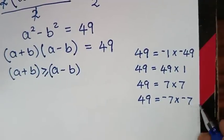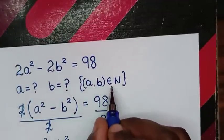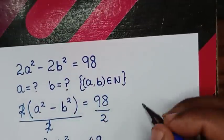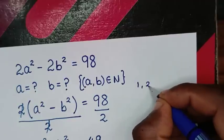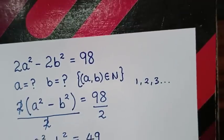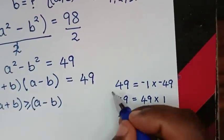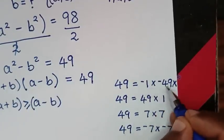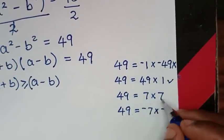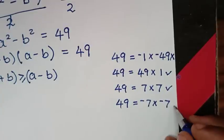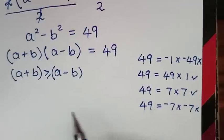Since (a, b) must be elements of the natural numbers — which excludes 0 and negative numbers, being 1, 2, 3, and so on — the negative factor pairs (−1)(−49) and (−7)(−7) are rejected. That leaves us with two valid selections: 49 × 1 and 7 × 7.